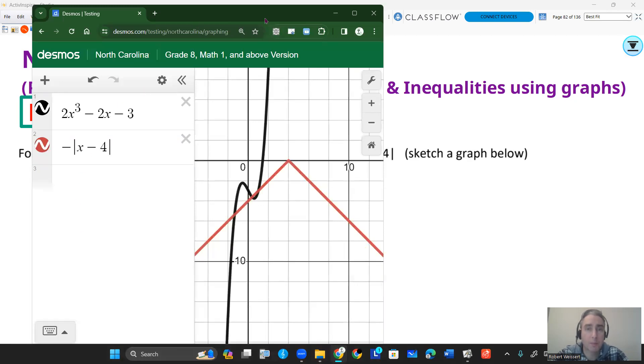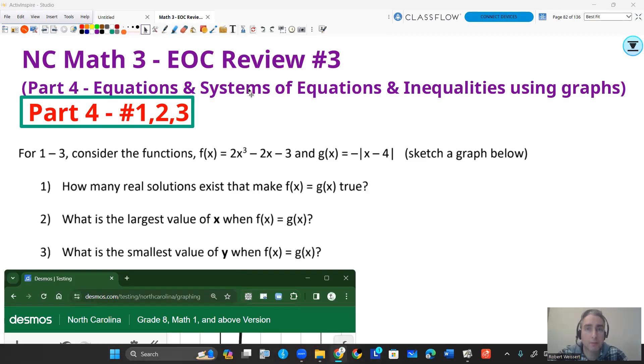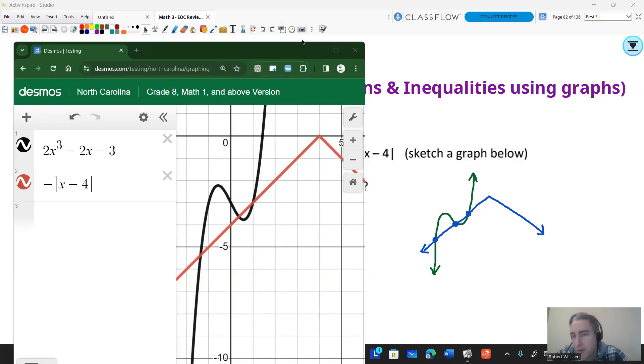So now how do I answer the question? Let me sketch the graphs first. I really don't care how accurate they are. I just want to make sure I can get the general shape of the graphs and how many points of intersection there are. When I zoom in on it, I see three points of intersection.